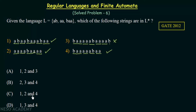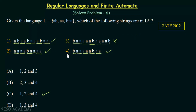Let us look at the answer options. We found that strings 1, 2, and 4 are in L closure. Option C says 1, 2, and 4 — so the correct option is C. All other options are wrong because they include string 3, which cannot be formed. Options A, B, and D all contain 3, which is not in L closure. The only correct answer is option C, which says strings 1, 2, and 4 are in the closure of L. I hope this was clear. Thank you for watching.